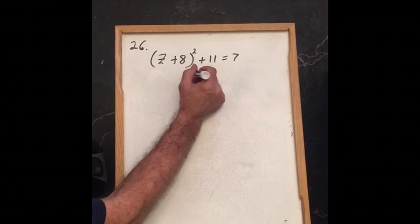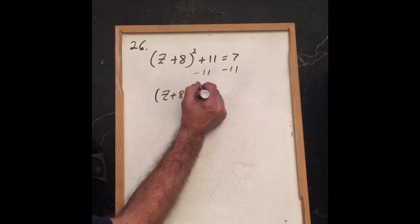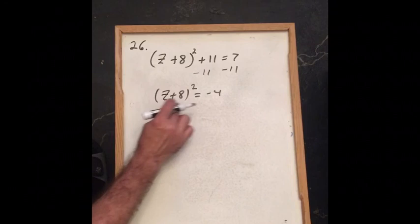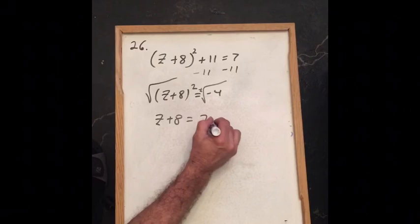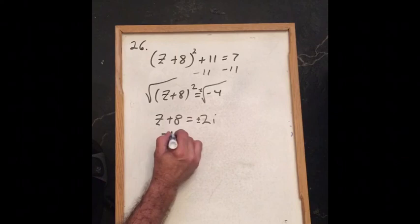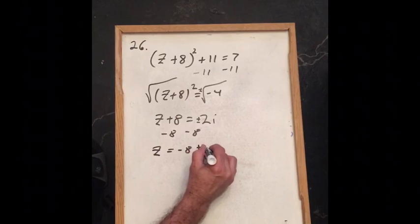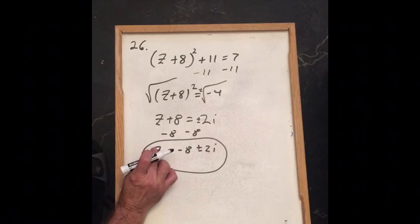For problem 26, subtracting 11 from both sides gives (z plus 8) squared equals negative 4. This has no real solutions since a square cannot be negative. Taking the square root of both sides with plus or minus: z plus 8 equals plus or minus 2i. Subtracting 8 from both sides gives z equals negative 8 plus or minus 2i.